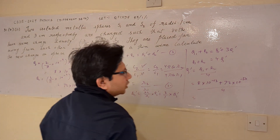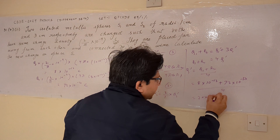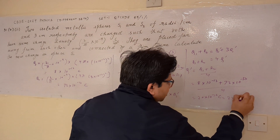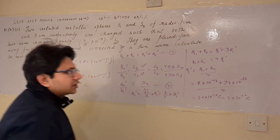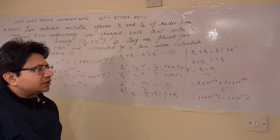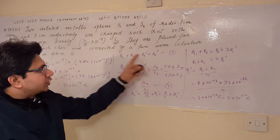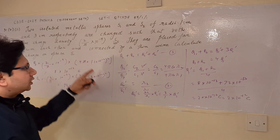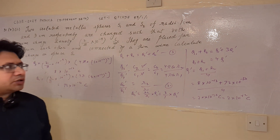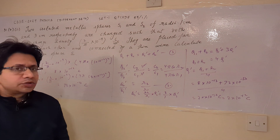This value comes out to be 20 × 10⁻¹³ C, which equals 2 × 10⁻¹² C. So the final answer is 2 × 10⁻¹² C — this is the charge on sphere S1 after they are connected by a thin wire. Hope you understand the solution. Thank you.